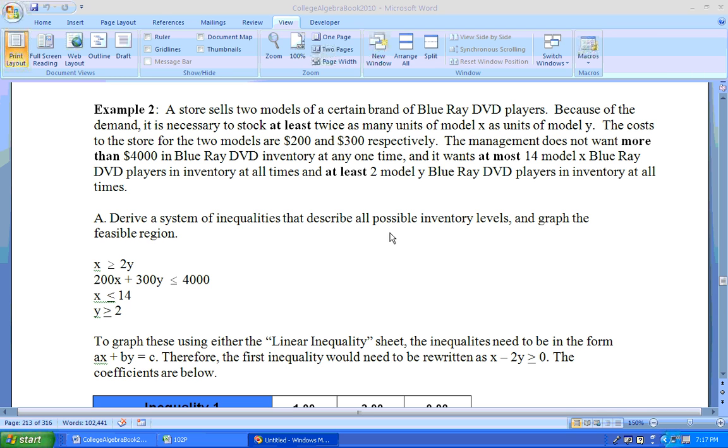Then the last two, at most 14 of the model X means that X has to be less than or equal to 14. And at least two model Ys, so Y has to be greater than or equal to 2. So these are four inequalities.